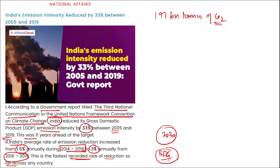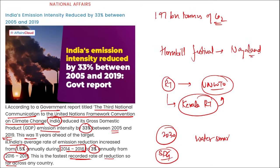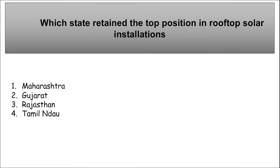अगर आपसे question पूछा जाए — Hornbill Festival कहाँ पर होगा? तो यह Nagaland में देखने को मिलेगा। किस state के responsible tourism ने UNWTO की list में अपना नाम जोड़ा? वो है Kerala। Water Smart Kid Campaign किसके द्वारा launch किया गया था? Meghalaya के द्वारा। Which state retained the top position in rooftop solar installation? वो है Gujarat। Gujarat में almost 26.7% rooftop solar installations देखने को मिलते हैं — यह पहली position पे है। Maharashtra second position पे with 13.5%, और Rajasthan third position पे with 8.3%।